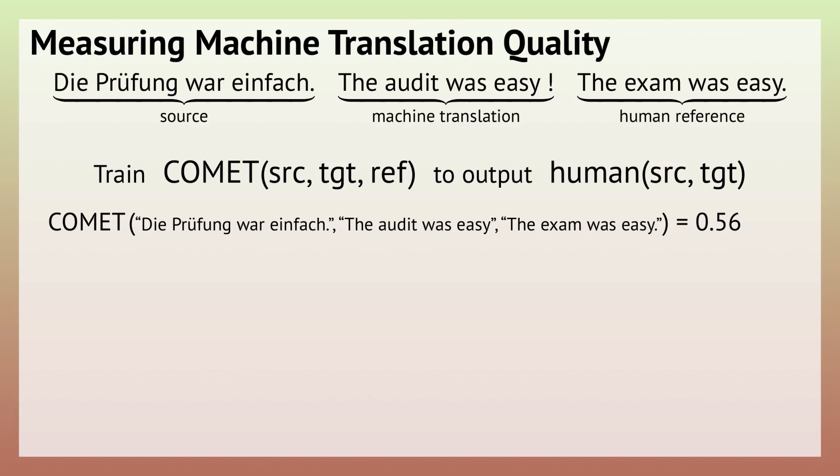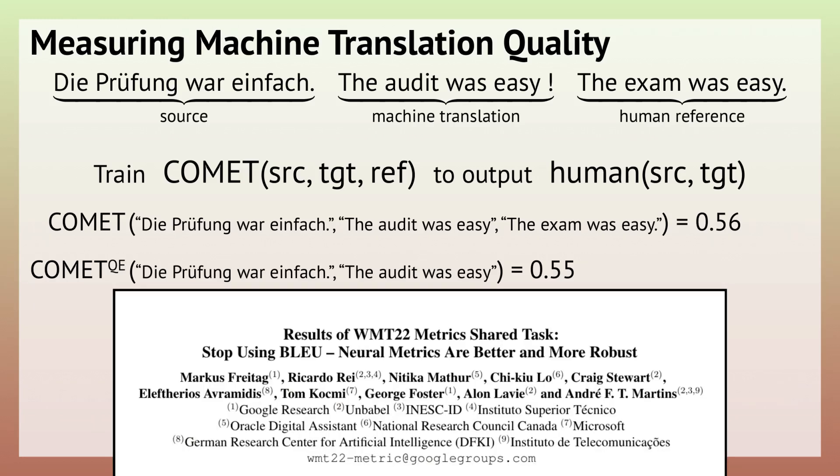Four years ago, a new metric took the landscape by storm, having much higher correlations with human judgments. The main trick is that it's not a fixed algorithm based on some heuristics, but a trained model. It is a language model trained to predict the human judgments of translation quality. This setup also allows us to not always rely on human reference, enabling quality estimation and reference-less metrics. The overall consensus seems to be that handcrafted string-matching metrics are obsolete in favor of these neural metrics.